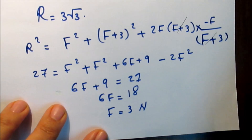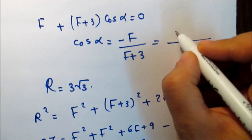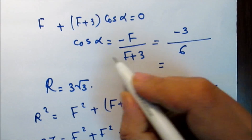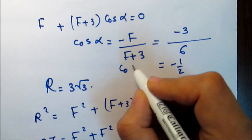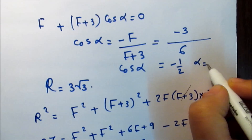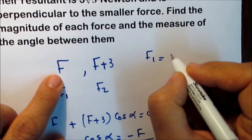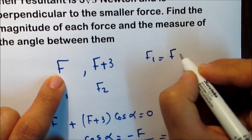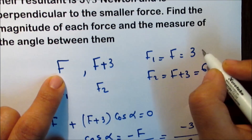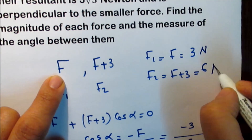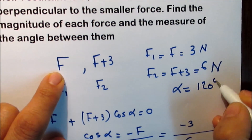Now that f = 3, we find cos α = −3/(3 + 3) = −3/6 = −1/2, so alpha = 120°. Therefore, f1 = f = 3 newtons, f2 = f + 3 = 6 newtons, and the angle between the two forces is alpha = 120°.